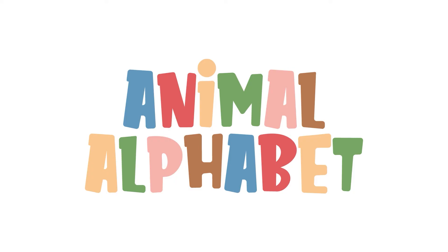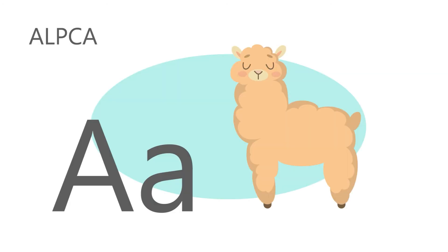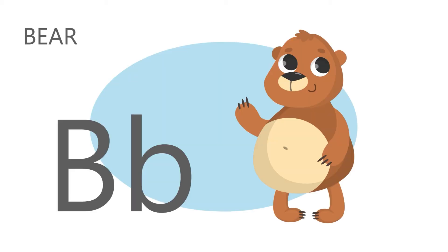Hey, Sprouts! Let's say the animal alphabet. A is for alpaca. A, a, alpaca. B is for bear. B, b, bear.